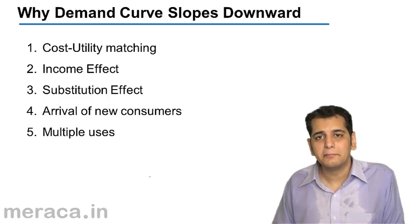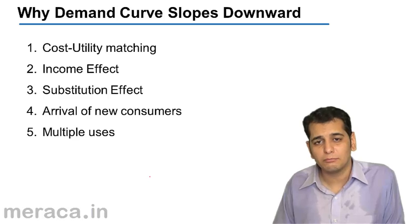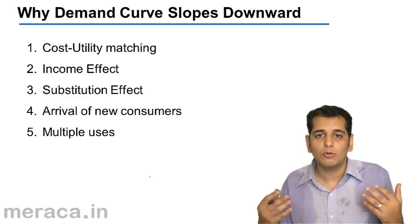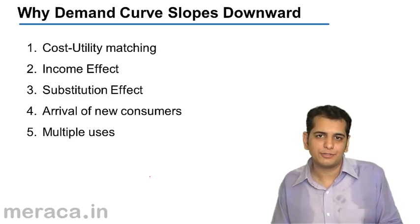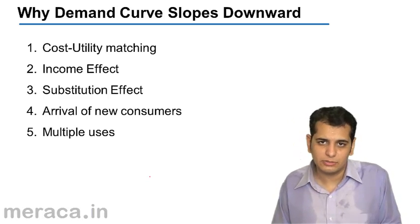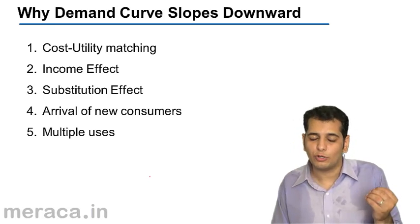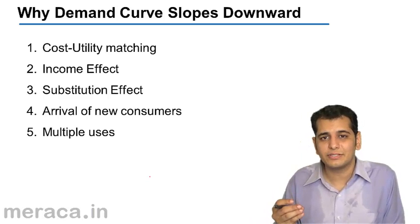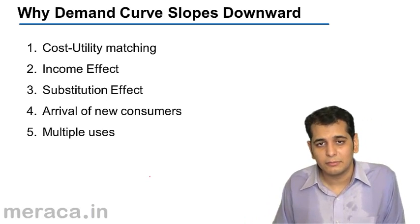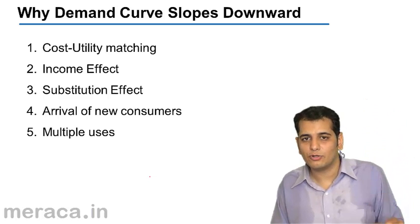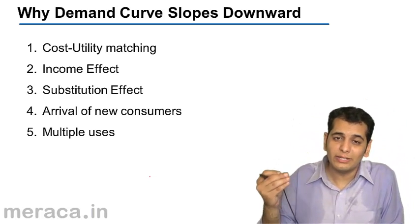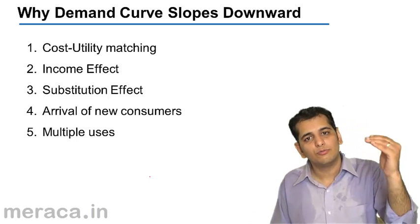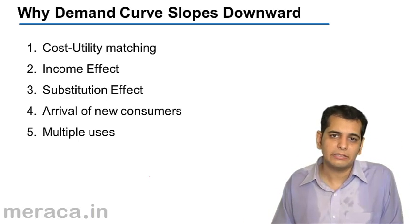The last point is multiple users. When a product has multiple users and its price falls, people tend to use it for more purposes. For example, electricity can be used for various reasons like cooking, heating, and regular household activities, but many people do not use electricity for cooling purposes citing cost reasons. When the electricity cost comes down, people tend to use it for cooling and heating purposes as well. So the consumption of electricity rises with the fall in price, leading to a downward-sloping demand curve.